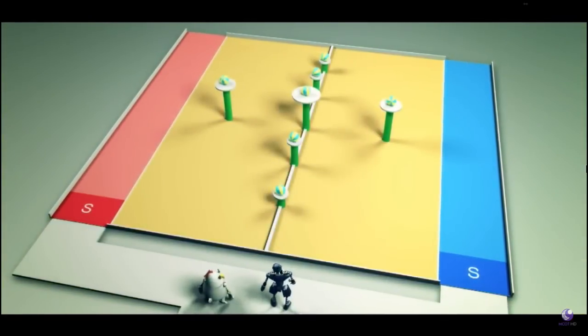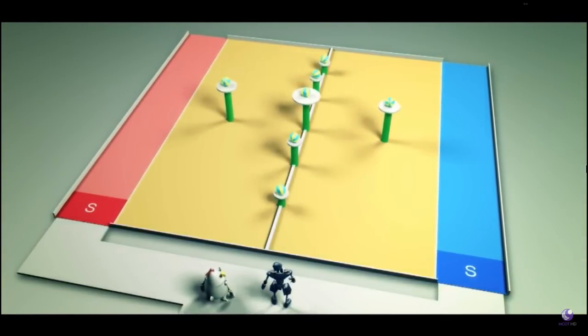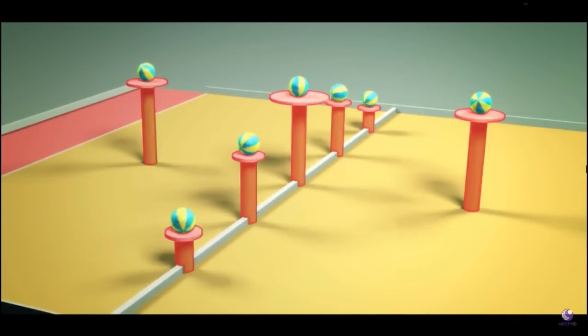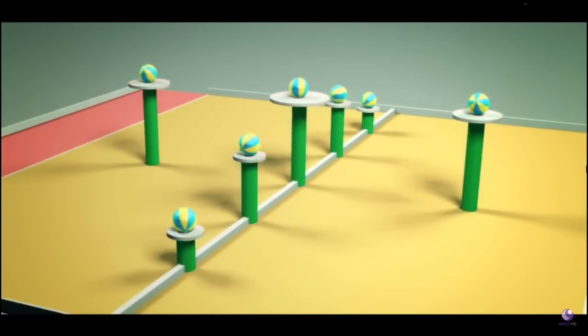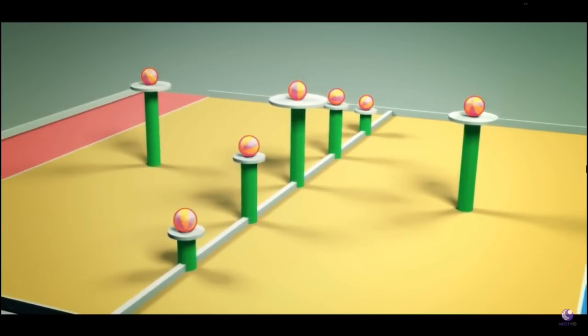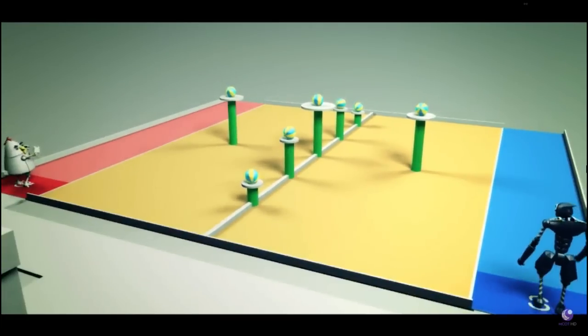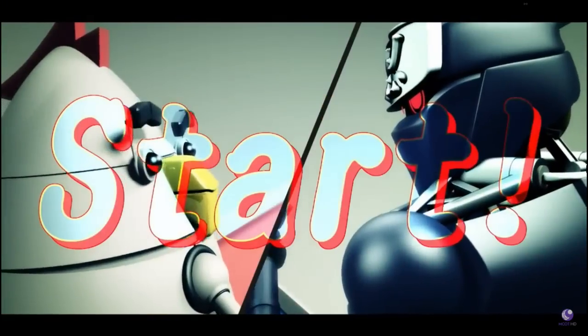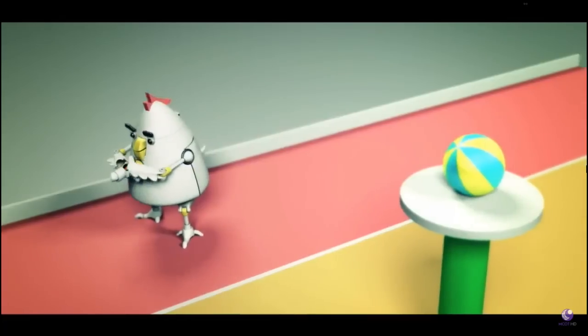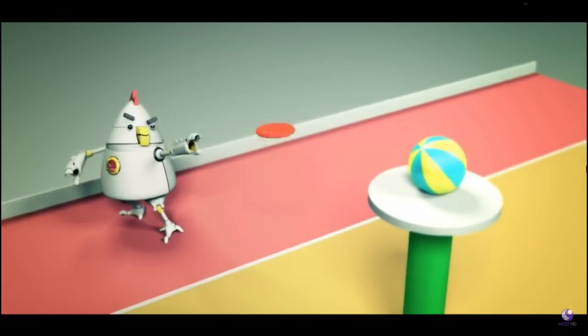In each game, red and blue sides will compete for three minutes. On the field will be seven spots of varying height, with a ball resting on each one. And we're off! The robot first needs to throw discs at the balls from the throwing area.